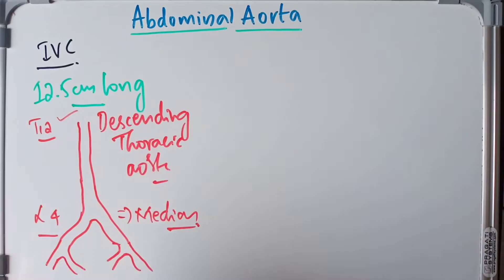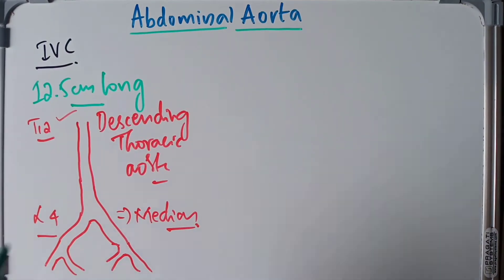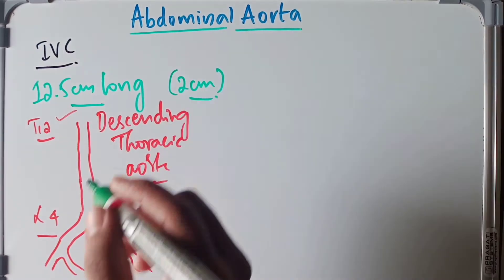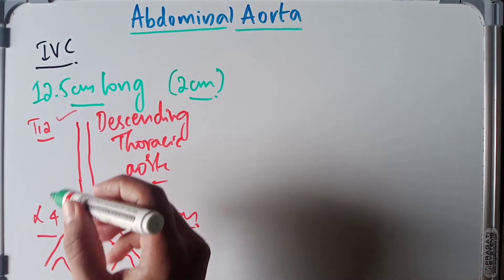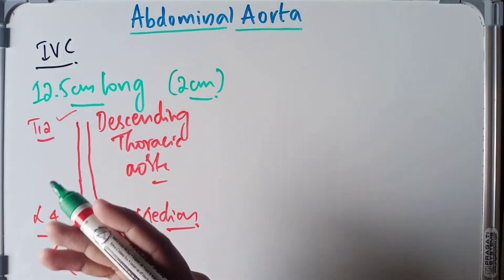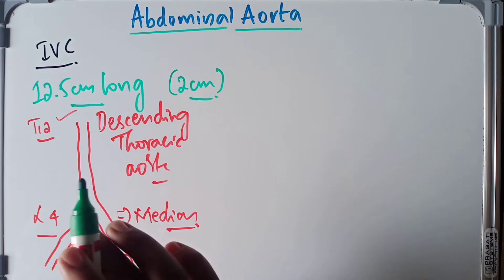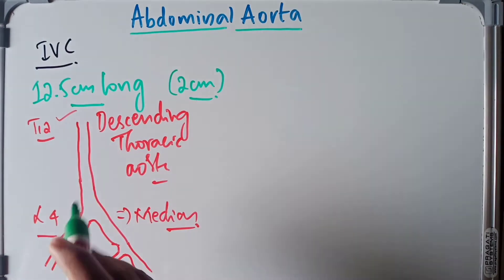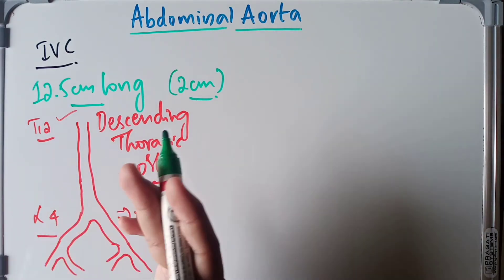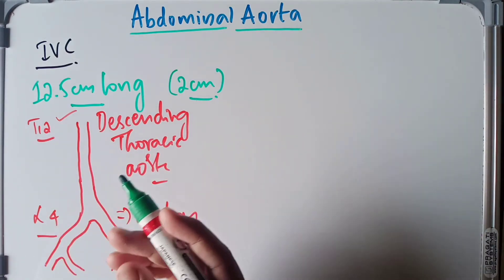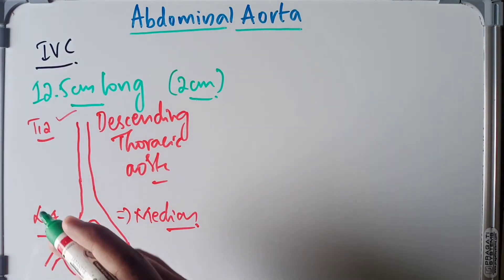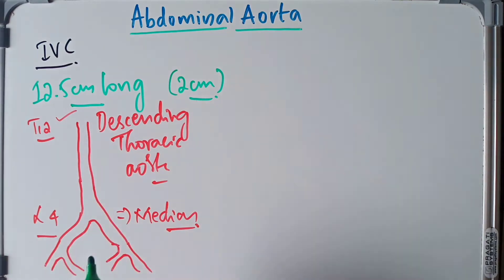The abdominal aorta is up to 2 cm in width. Discussing its relations: posterior to the abdominal aorta we have the bodies of the upper four lumbar vertebrae and the third and fourth lumbar veins. Anterior to the abdominal aorta, we have the celiac plexus and ganglion, the body of the pancreas, splenic vein, left renal vein, the root of the mesentery, and coils of the small intestine.